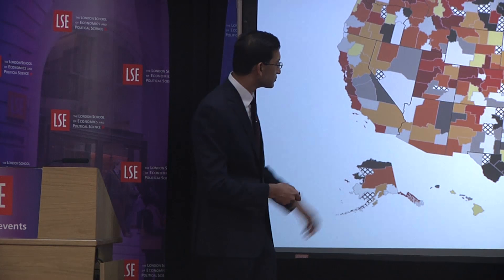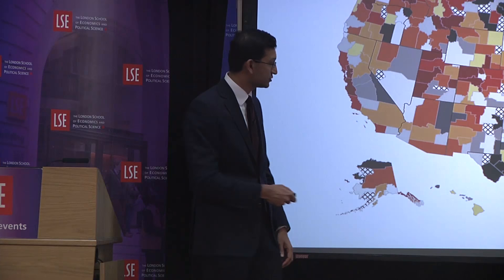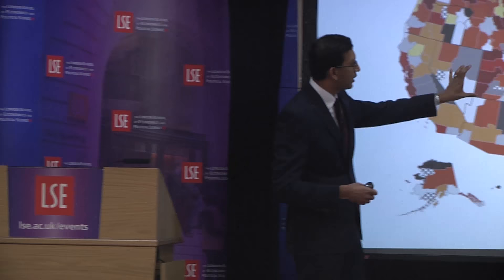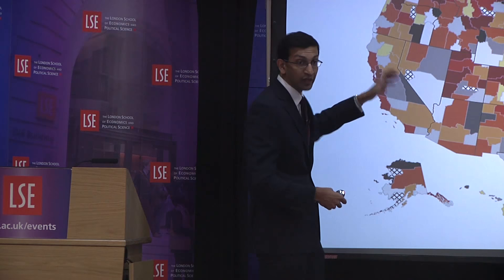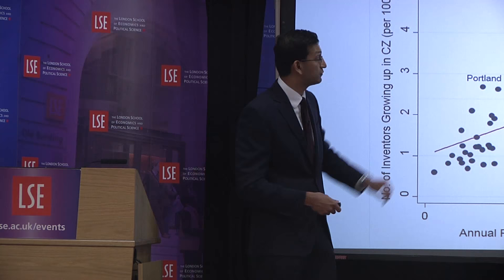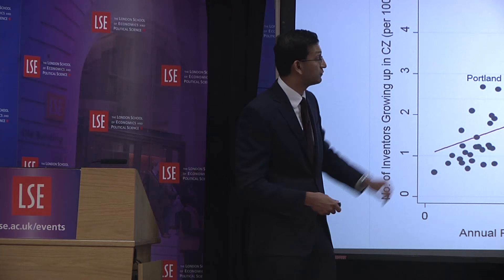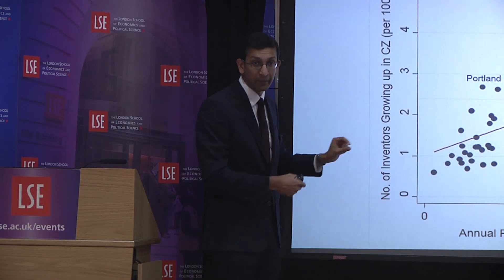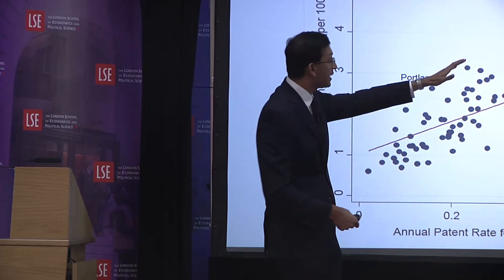Kids are more likely to grow up to become inventors in areas where there's already a lot of innovation occurring. A scatter plot of the 100 largest commuting zones shows a very strong relationship between the adult patent rate in an area and the fraction of kids who grew up there and became inventors. Silicon Valley is at the far right with the highest innovation rate. If you grew up in an area with more inventors, you yourself are more likely to become an inventor in adulthood.